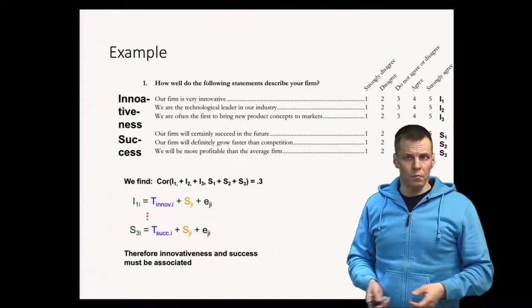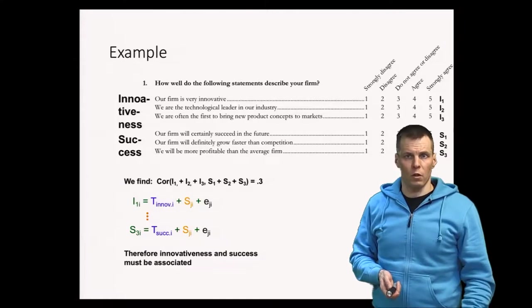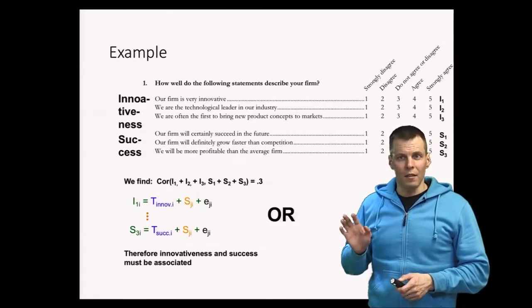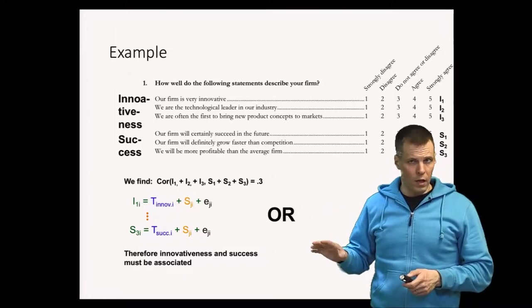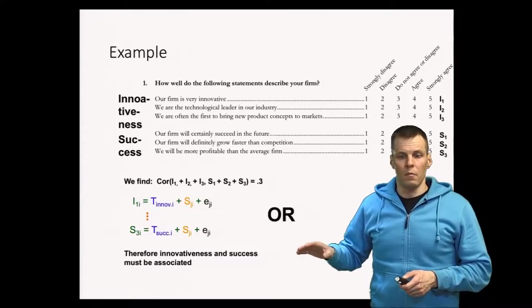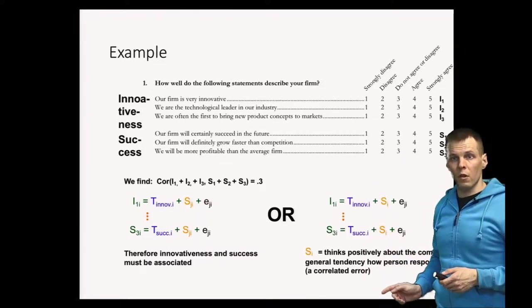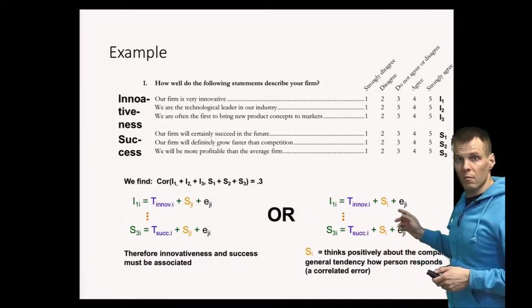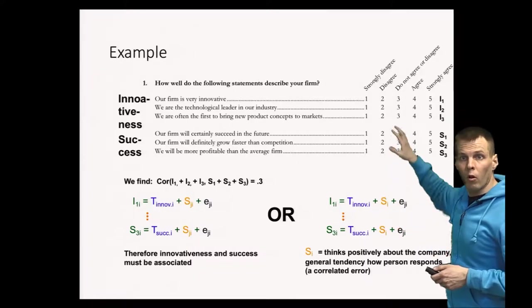So what kind of problems do we have? Do we have any alternative explanations for the correlation? It's also possible that these indicators don't measure only innovativeness and only success, but they measure also whether the person thinks positively about the company.